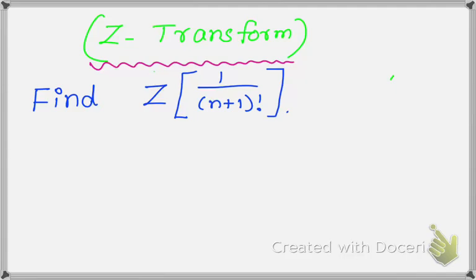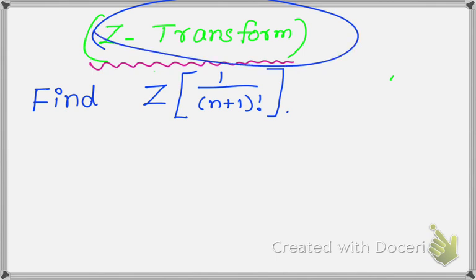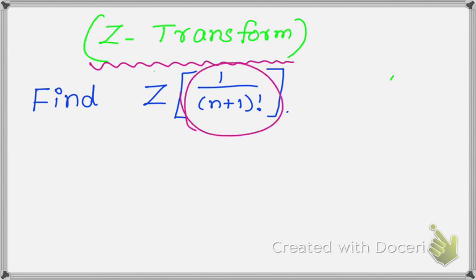Dear students, in this video we are going to solve a problem from Z transform. The problem is: find Z of 1 over (n+1) factorial.